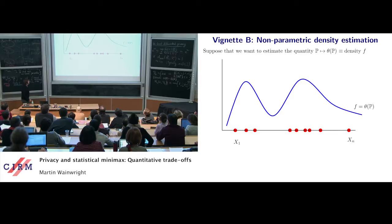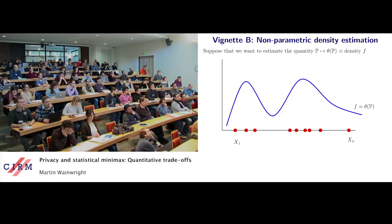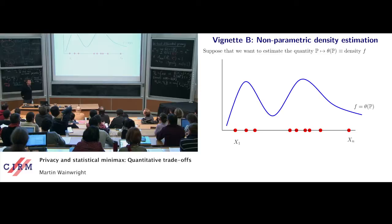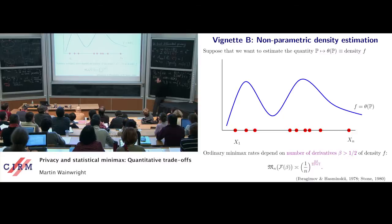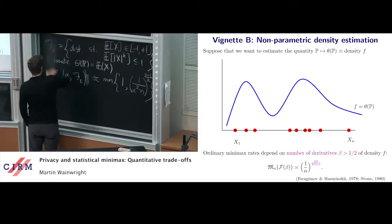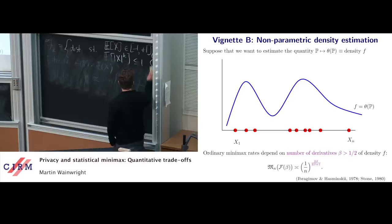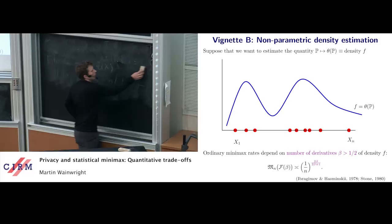In nonparametric density estimation, we have some density I'll assume is smooth. The x1 through xn samples are drawn from this unknown density and we'd like to estimate it. In the classical case, the minimax rates are well understood and depend on the smoothness. If the density has order beta derivatives — beta a Sobolev-type smoothness parameter larger than a half — the ordinary minimax rate scales like 1 over n^(2beta/(2beta+1)).